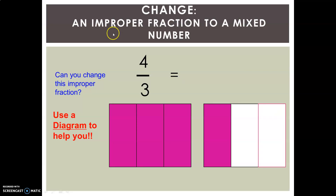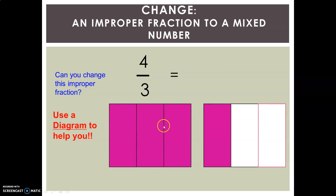Change an improper fraction to a mixed number. Can you change the improper fraction to a mixed number? Yes. You can see four upon three. Use the diagram to help you. The first shape is fully shaded — that is one whole. In the next shape, only one part is shaded out of three. So this can be written as one and one upon three.